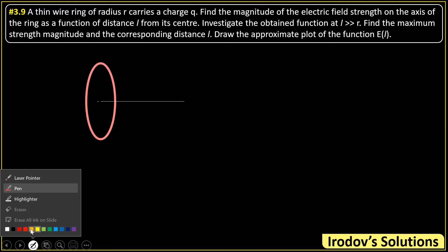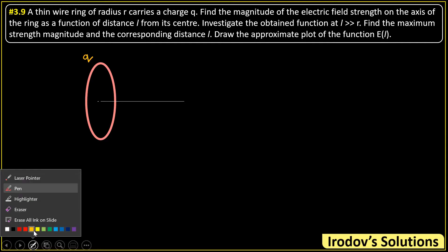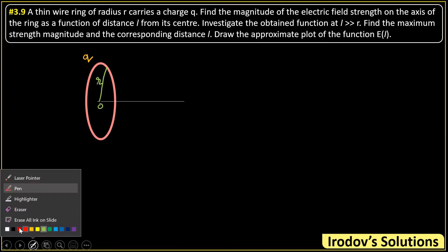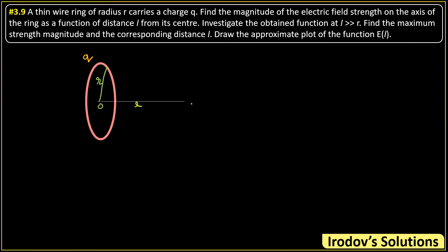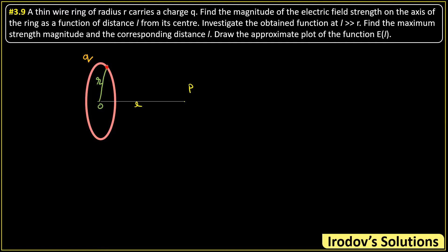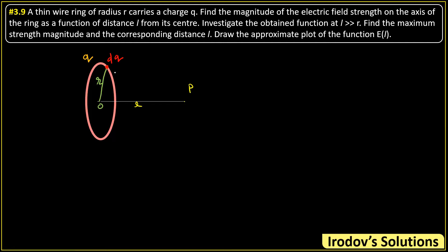Here is the diagram of the problem. This is a ring having total uniformly distributed charge q, its radius is r. O is the center, and at a distance l from the center at an axial point — say this point is P — we have to find the electric field. We take a small element of charge dq on the ring.